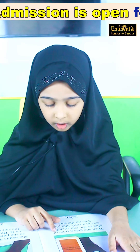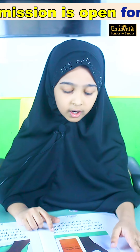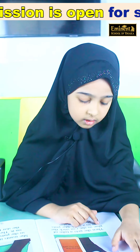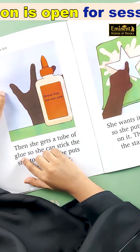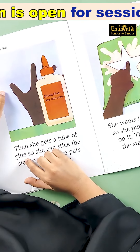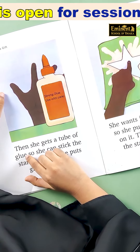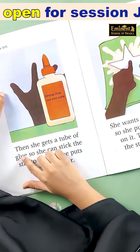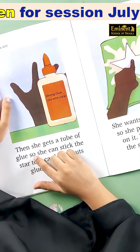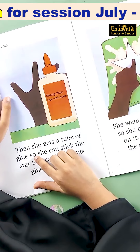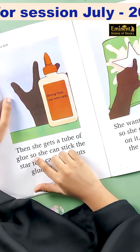Tube. Off. G, L, U, sign of final E — glue. S, O — so.